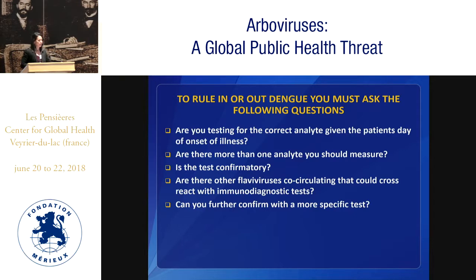To rule in or rule out dengue, you must ask yourself the following questions. The problem with dengue diagnostics nowadays is that people who try to do diagnostics have no understanding of the kinetics of all the virus, antigen, and antibody, so they're not really using the right test. So: are you testing the correct analyte given the patient's onset of illness? You see people testing for PCR at day 10, really wasting a lot of reagents. Are there more than one analyte you should measure? Is the test a confirmatory test? Are there other flaviviruses co-circulating that could cross-react if you're using an immunodiagnostic test? And can you further confirm your testing?